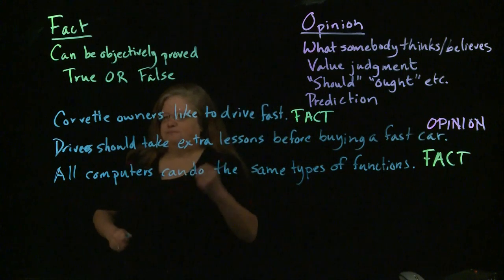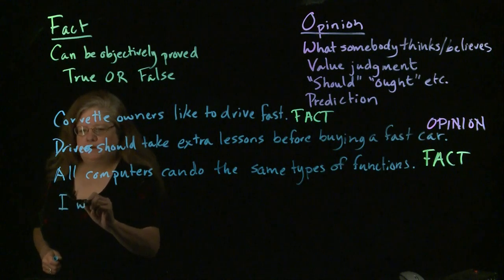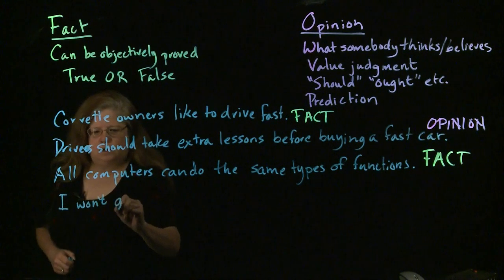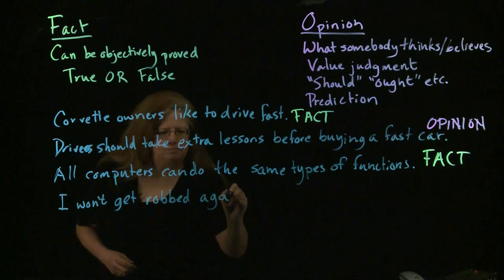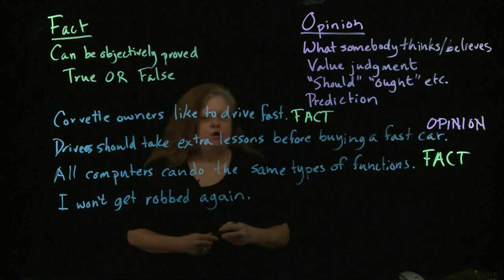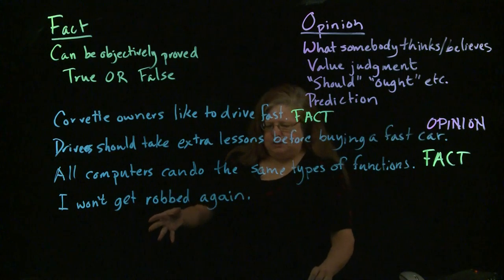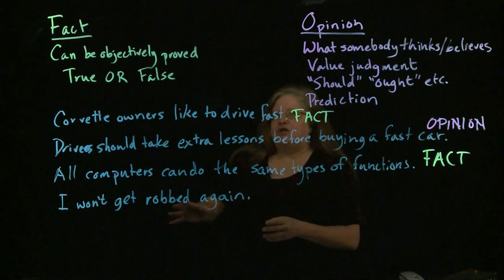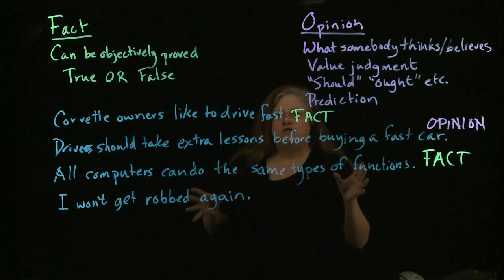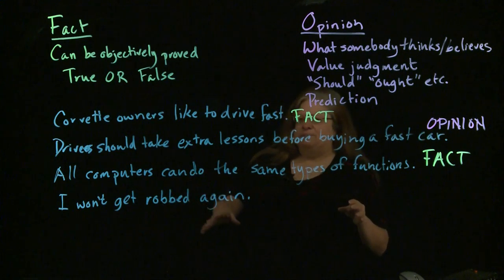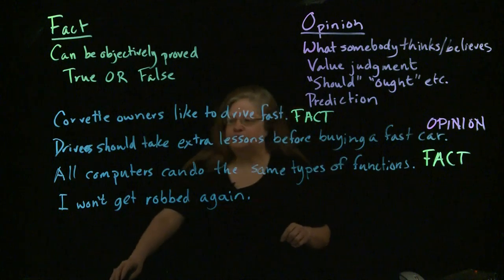Here's another one. I won't get robbed again. We look at this and what we see, if we're looking at our flags for what is an opinion, we have a prediction. Since we have a prediction, that means it's going to be an opinion just automatically.